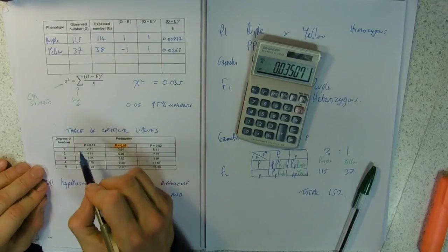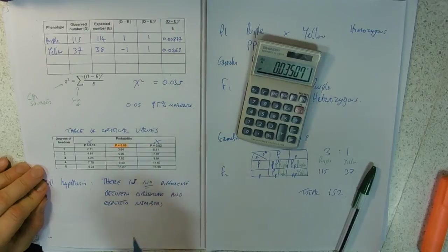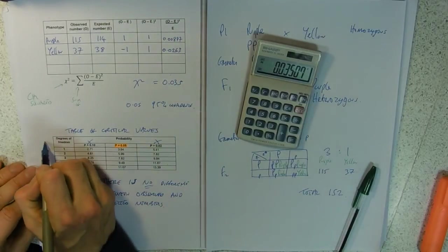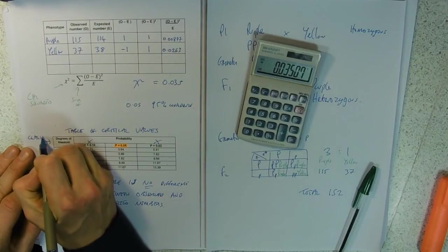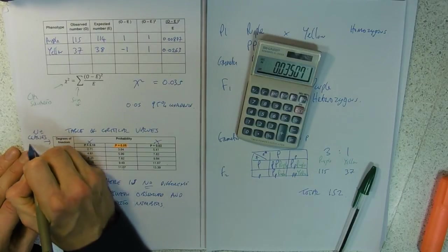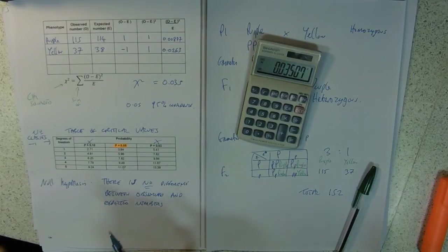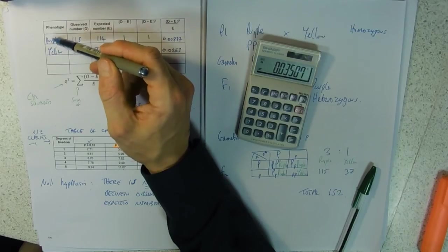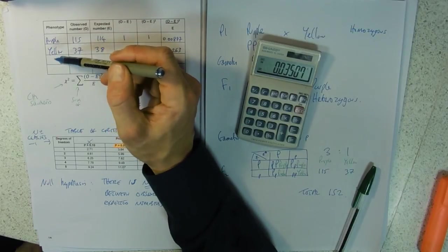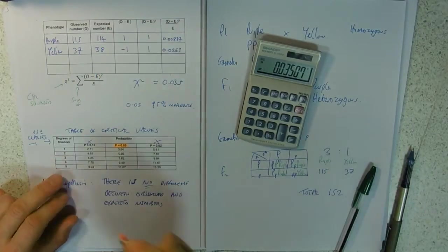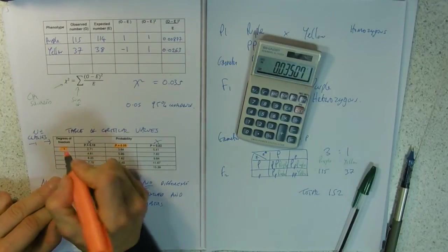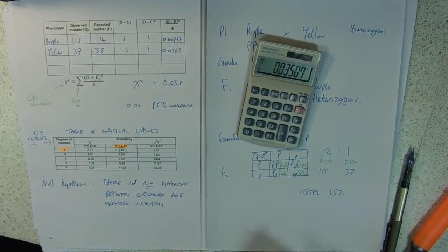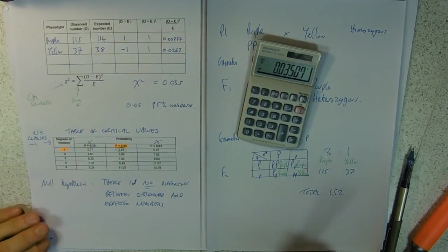Degrees of freedom - the degrees of freedom is the number of classes minus one. Our classes are our phenotypes there, so we've got two of those minus one, so we've got one. So our number of classes means we're using this number here as our critical value.